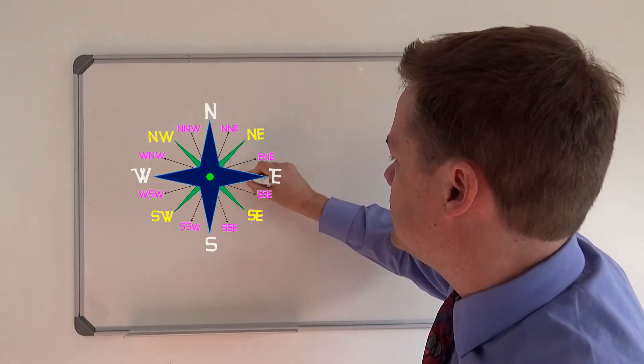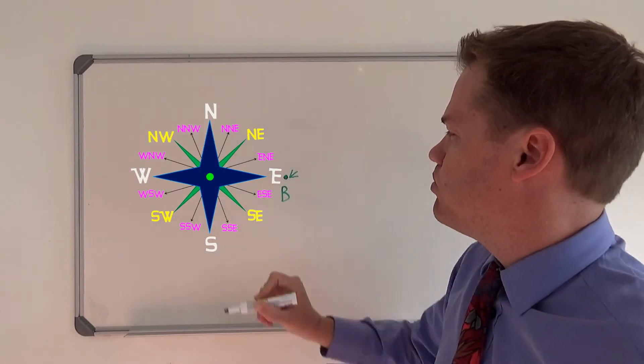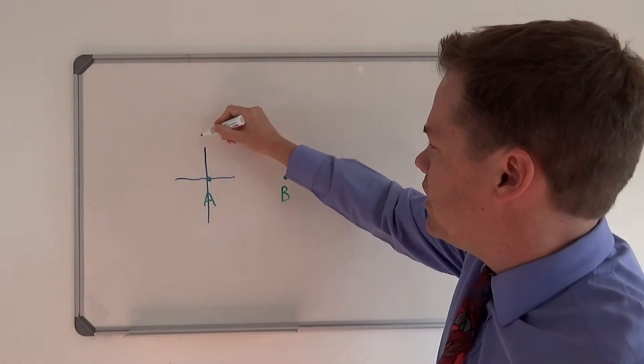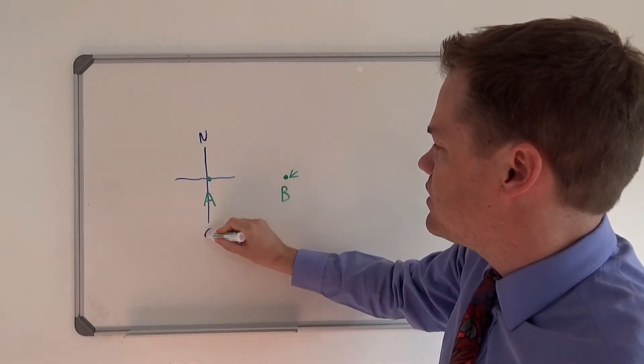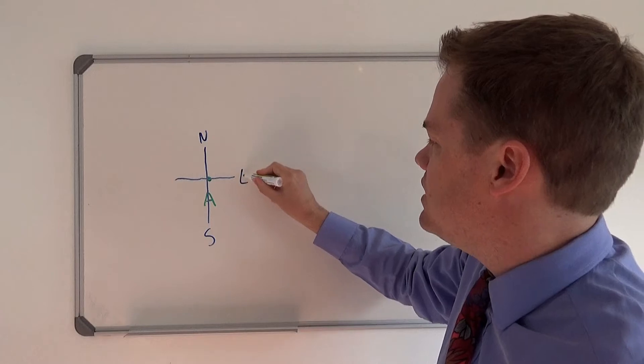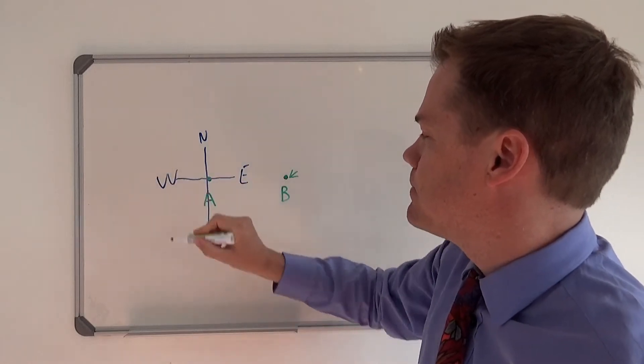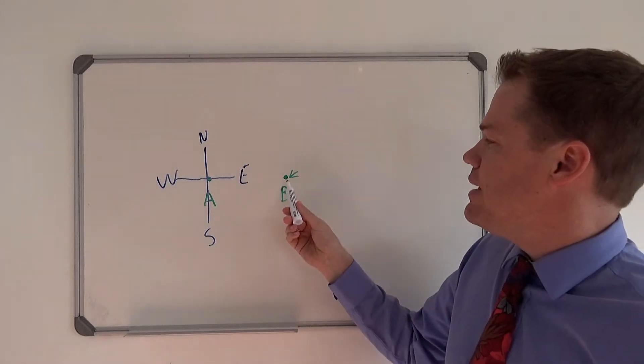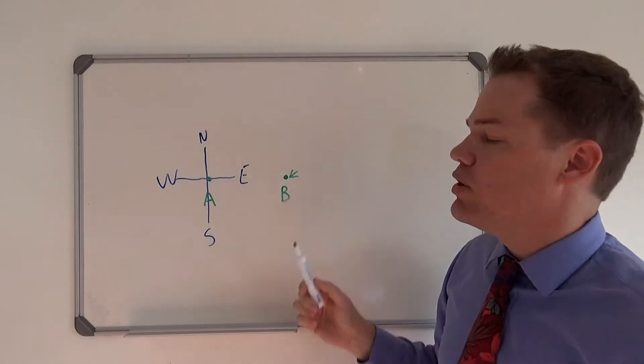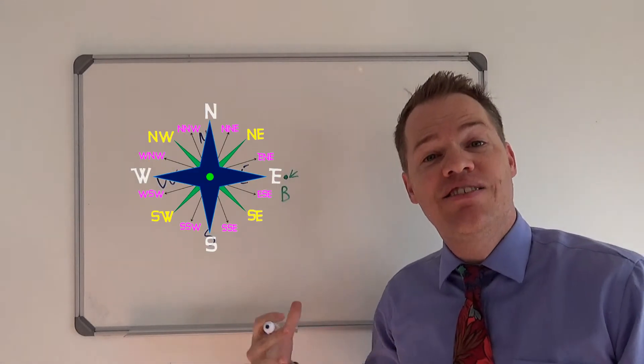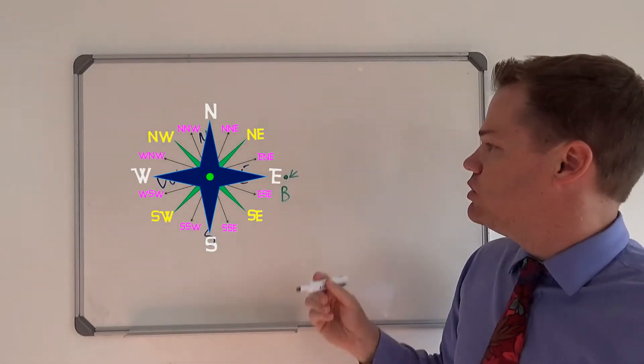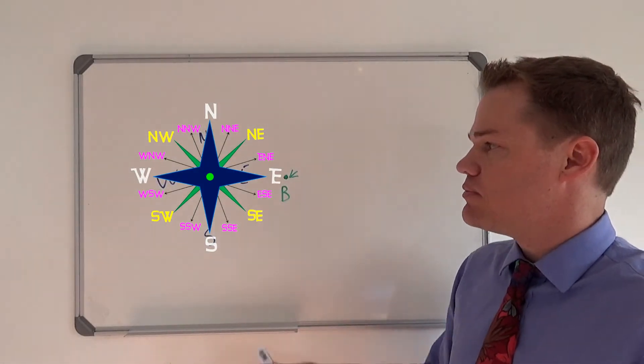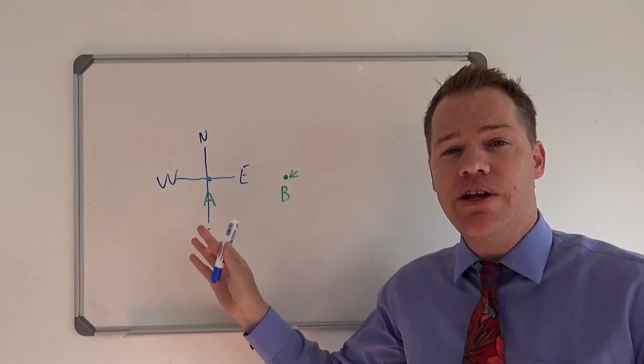And then we put north and south there, we have east and west. So here we can clearly see that B is to the east, or you would travel in an easterly direction to get to point B. So I would say this is a very good method.